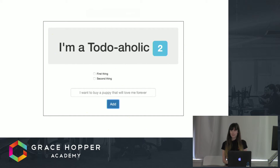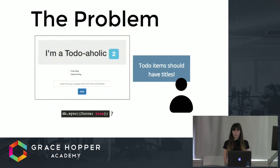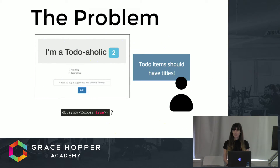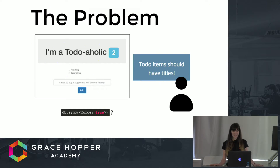Imagine that you're a developer and you work at Todoaholic, and your product is a simple to-do app. You have a million users or so. One day your product manager comes to you and decides that to-do lists should now have titles. You know from your experience with Sequelize that if you use the db-sync-force-true command, you will completely lose all of the data in your database.